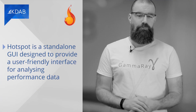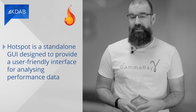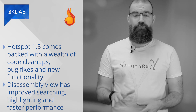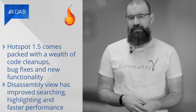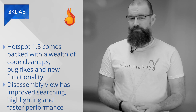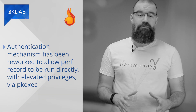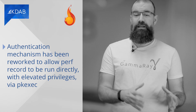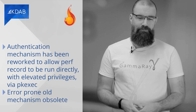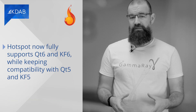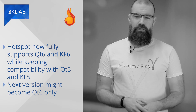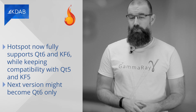For those of you unfamiliar with Hotspot, it's a standalone GUI designed to provide a user-friendly interface for analysing performance data. The latest version, 1.5, comes packed with a wealth of code cleanups, bug fixes, and new functionality. Most notably, the disassembly view has been further improved with better searching, highlighting, and faster performance. The authentication mechanism has been reworked to allow perf record to be run directly with elevated privileges via pkexec, making the old error-prone mechanism obsolete. Hotspot now fully supports Qt 6 and KF6 while keeping compatibility with their respective predecessors. The next version might become Qt 6 only. Read more in the release blog or directly on GitHub.